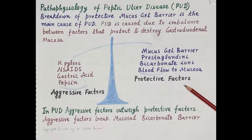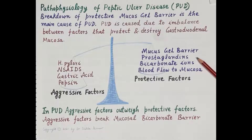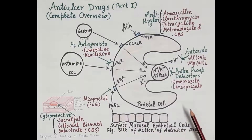A drug called colloidal bismuth subcitrate (CBS) is a cytoprotective drug. CBS is postulated to increase gastric mucosal prostaglandin secretion — specifically PGE2 secretion — and also to increase the secretion of mucus and bicarbonate ions.